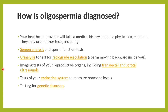How do you diagnose oligospermia or a low sperm count? By doing a semen analysis. Sometimes a urine analysis is done to check for retrograde ejaculation — whether sperms are going back into the urinary bladder instead of through the urethra. A transrectal or scrotal ultrasound may be done to look for abnormalities. Endocrine evaluation for hormones and genetic testing for chromosomal abnormalities may also be required.